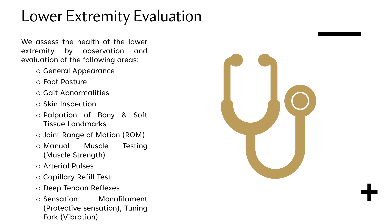In terms of the lower extremity evaluation, we assess the health of the lower extremity by observation and evaluation in the following areas: general appearance, gait abnormalities, foot posture, skin inspection, palpation of the bony and soft tissue landmarks, joint range of motion, manual muscle testing, arterial pulses, capillary refill testing, deep tendon reflex testing, and sensation testing. We will go into more detail for each of these categories in the following slides.